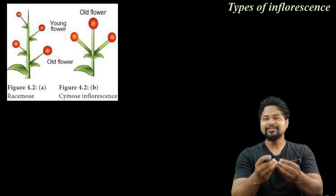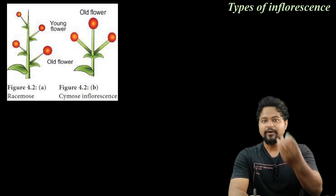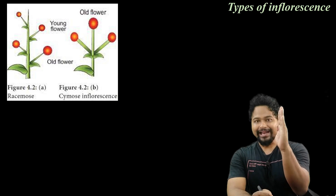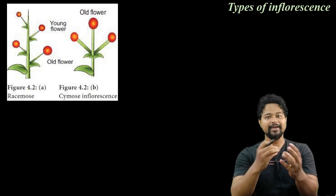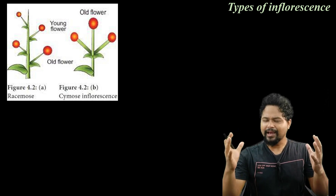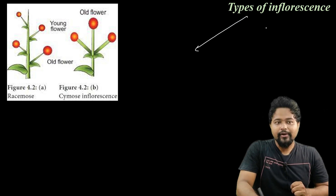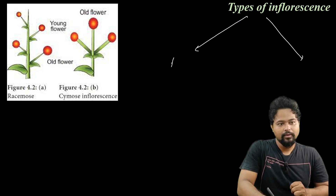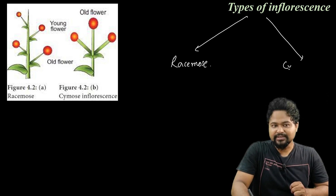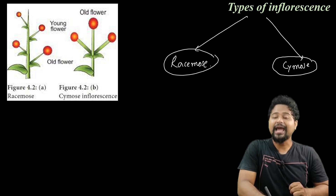In the last class, I talked about inflorescence and basic terms of flowers. The first type is racimose and the next type is cymose. This is the main classification of our types of inflorescence.